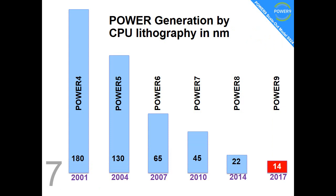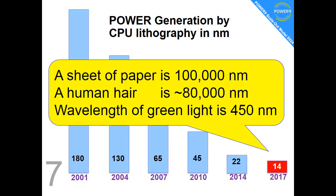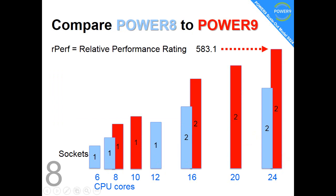Fact number seven: lithography. With every generation of chip, we make the tracks that form the individual transistors and components inside the chip smaller. We're now down to 14 nanometers. How big is a nanometer? A sheet of paper is 100,000 nanometers, a human hair is 80,000 nanometers. If you take a hair, split it lengthways in half, then do it in half again and again — if you do it seventeen times — you're down to the size of these individual tracks.